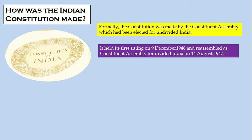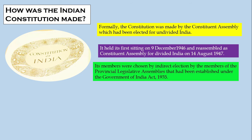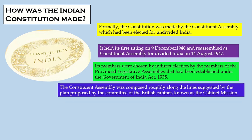The Assembly reassembled as a Constituent Assembly for a divided India on 14th August 1947. Its members were chosen by indirect elections by the members of the provincial legislative assemblies that had been established under the Government of India Act 1935.